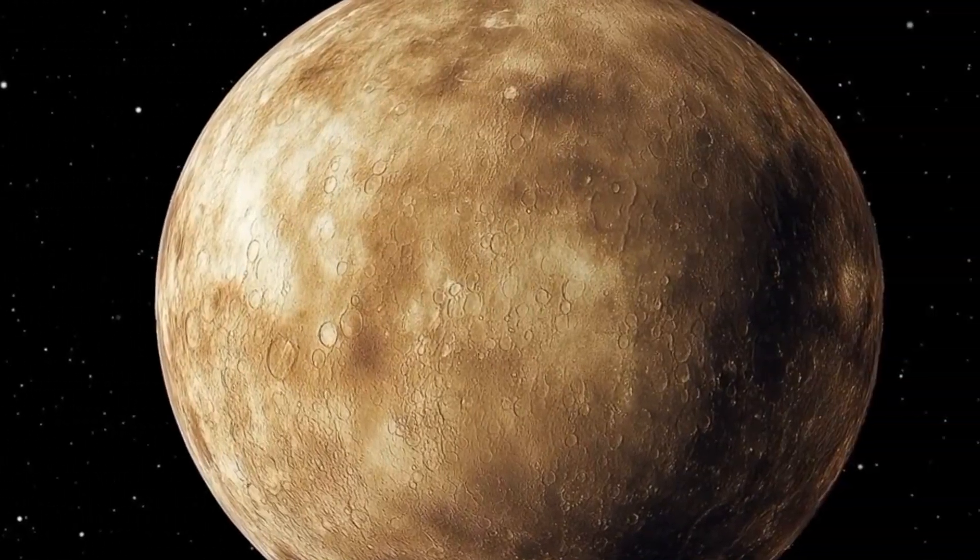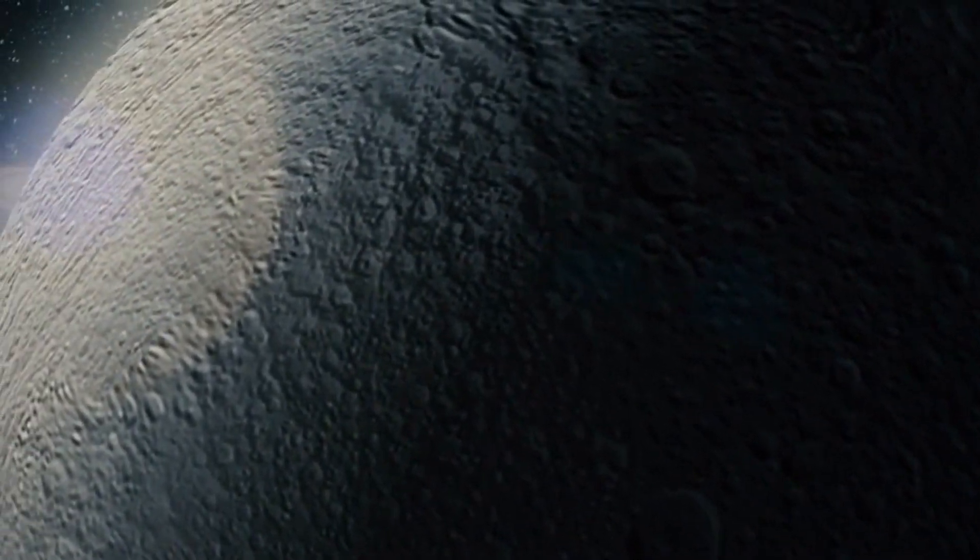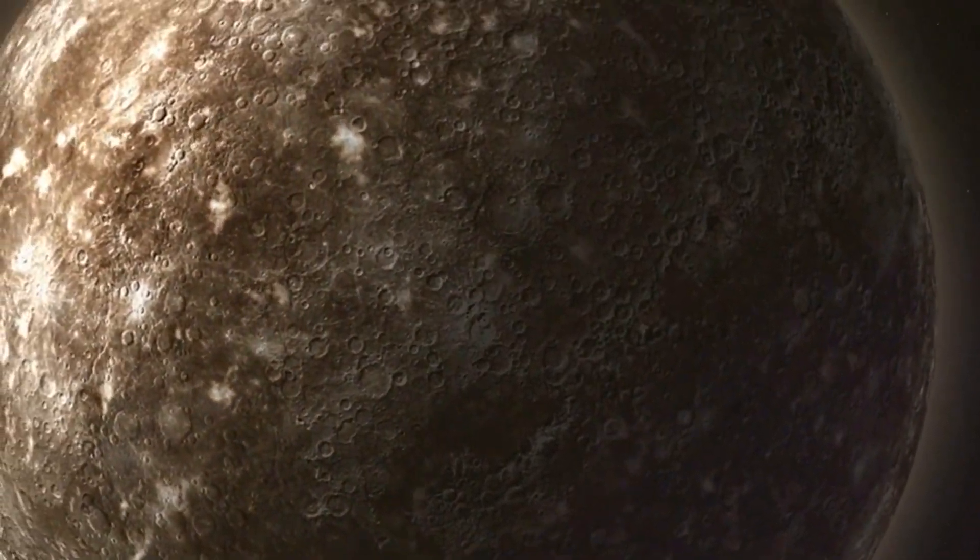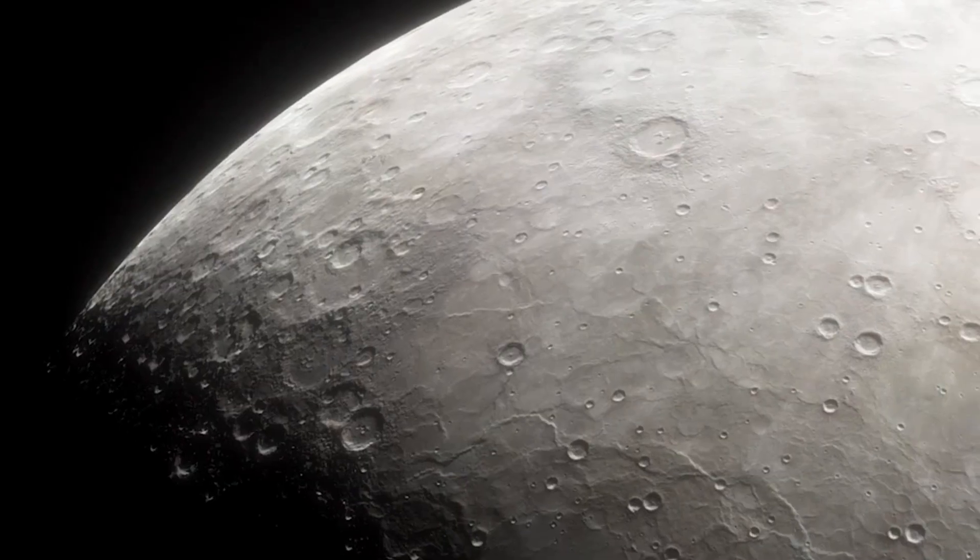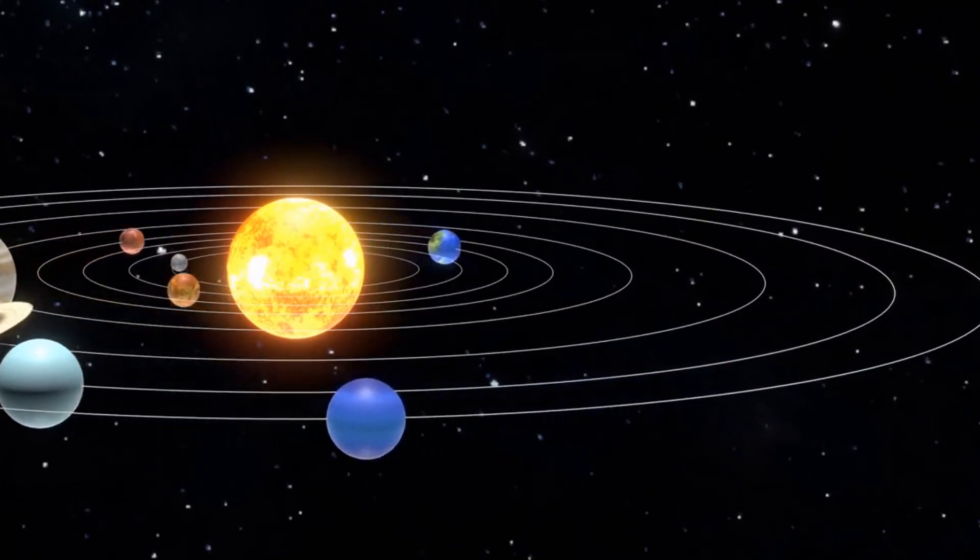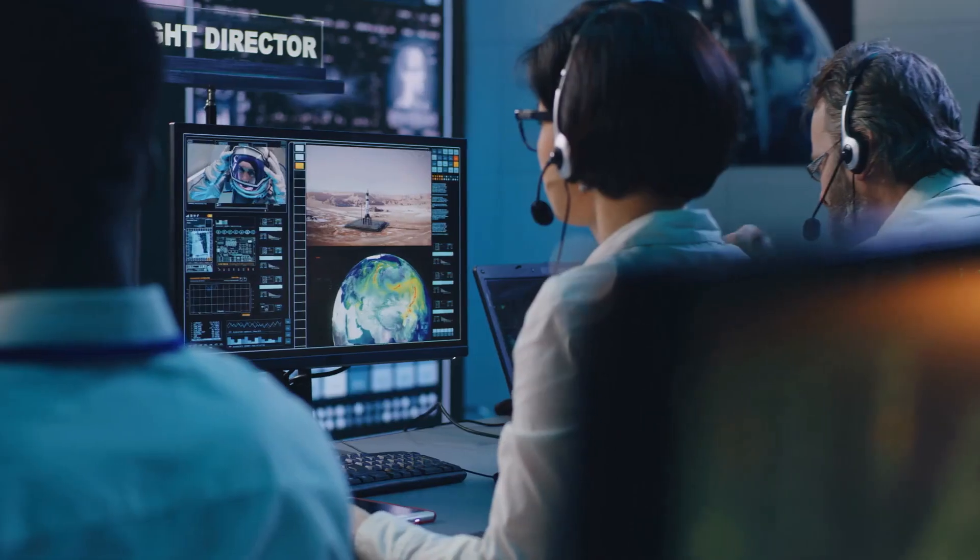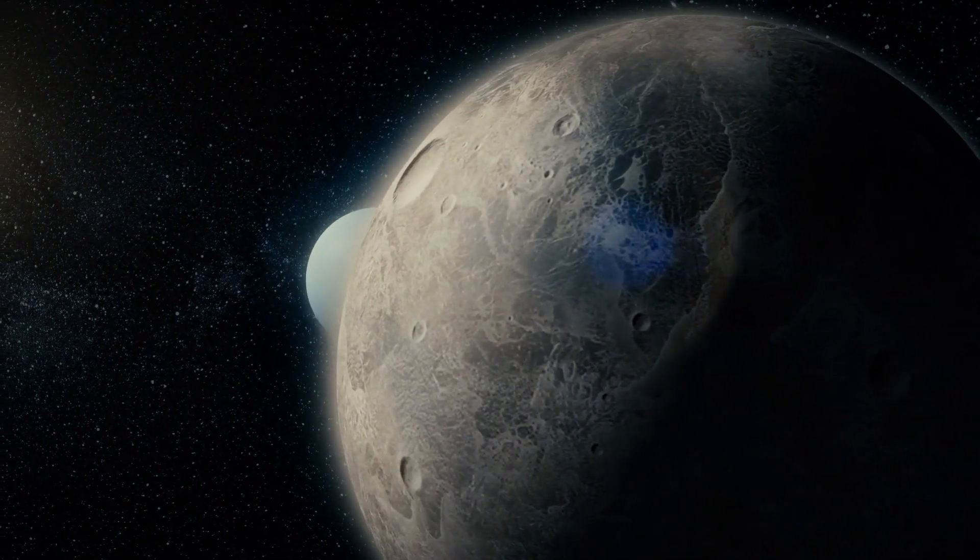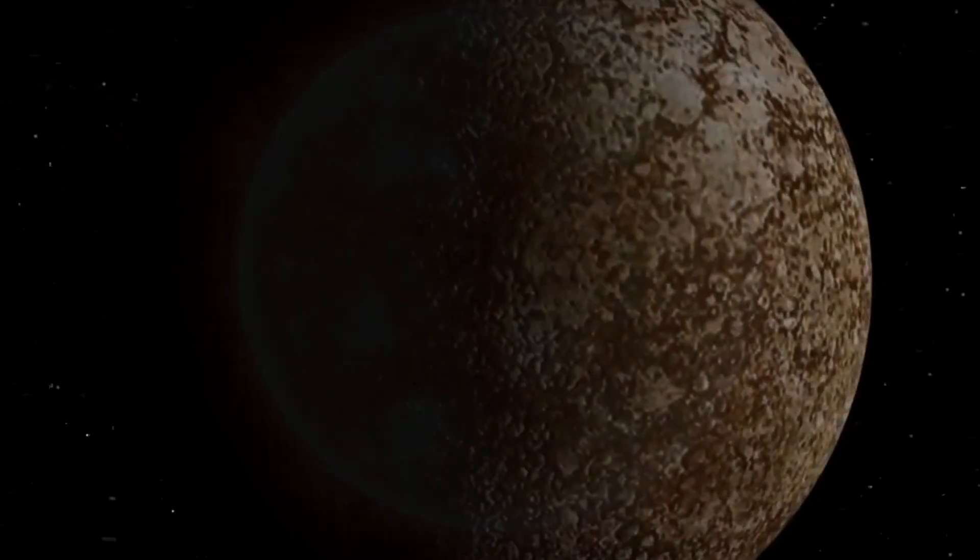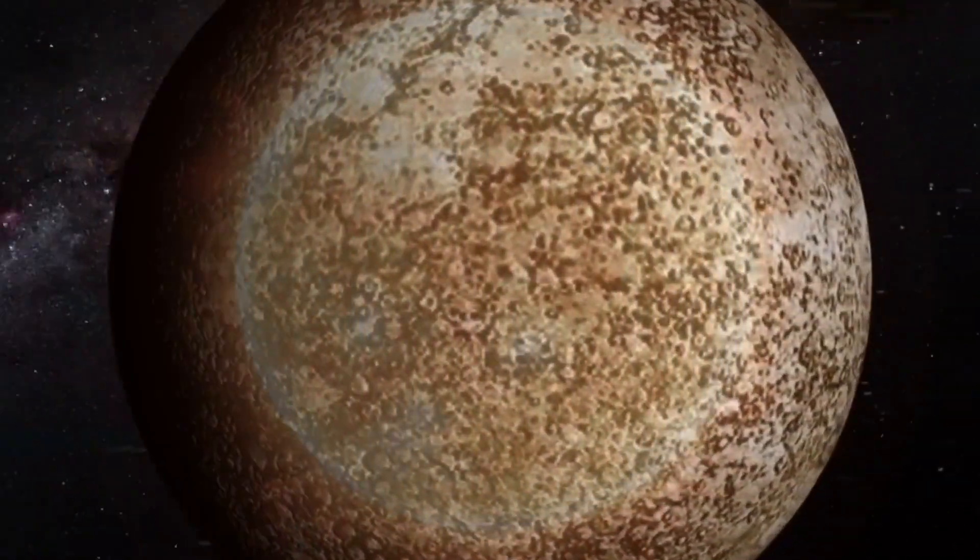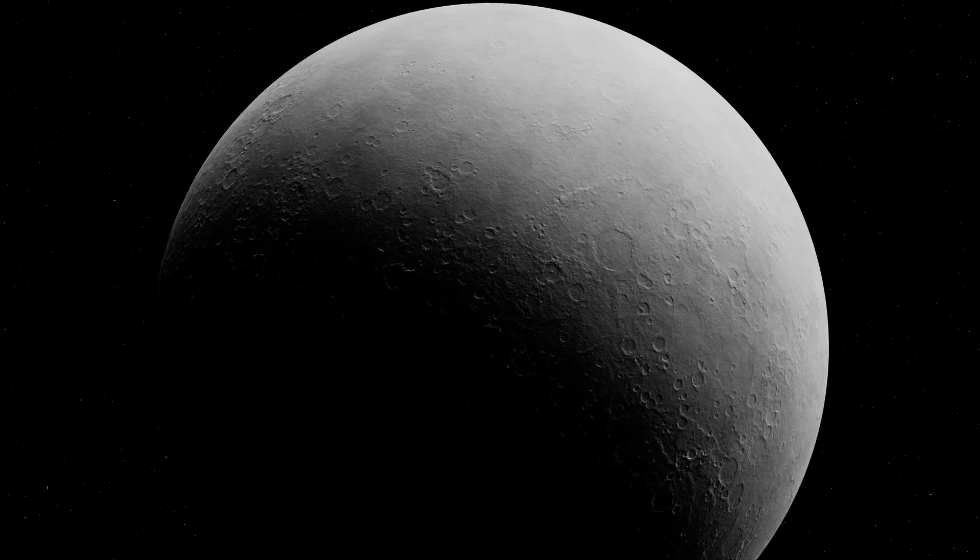As we delve deeper into Mercury, new questions arise about its internal changes over time, the potential for trapped volatile chemicals, and what its depths can reveal about the early solar system. Each discovery enhances our understanding of this fascinating planet and the formation of inner solar system bodies. Looking ahead to future missions, it's clear that Mercury still holds many secrets. Despite its small size and proximity to the Sun, its interior may offer clues about our solar system's history.